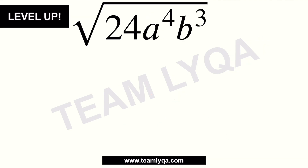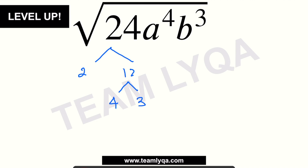I-level up naman natin. Paano kung ganito: square root of 24a⁴b³? Relax — kapag nakakita tayo ng mga letters, huwag kayong mag-alala, ibibreakdown nga natin ito, it's really easy. The first thing we're going to do is acknowledge na kapag pinagtabi-tabi natin ito, they are being multiplied together. Much like what we did before, pwede nating ipila lahat ng mga factors nito — fully factor natin, then ilalabas lang natin yung mga magkakapares. You can start with the number part: ang 24 pwede kong hatiin into 2 and 12.